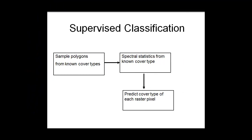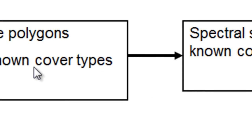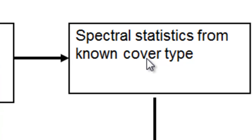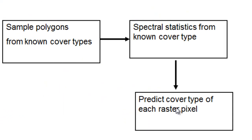Welcome back to Remote Sensing Applications. In this session we're going to do something called Supervised Classification. The basic idea is we use sample polygons from known cover types, extract pixel values within each polygon to get spectral statistics, and then based on those representative samples we predict the cover type of every pixel in our image.